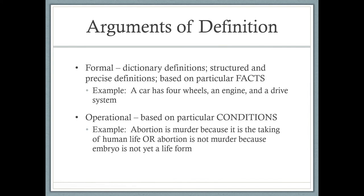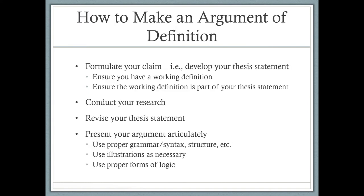How do you make an argument of definition? You'll see a lot of parallels with the argument of fact. First, you formulate your claim — develop your thesis statement. Ensure you have a working definition for whatever your argument of definition is, like 'abortion is murder' or 'abortion is not murder,' and make that working definition part of your thesis statement. Then conduct your research, revise your thesis statement, and present your argument articulately using proper grammar, syntax, structure, illustrations, and proper forms of logic. In an argument of definition, you state your working definition within your thesis statement, then give your main points.